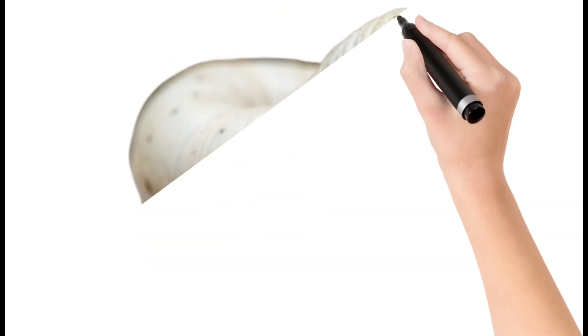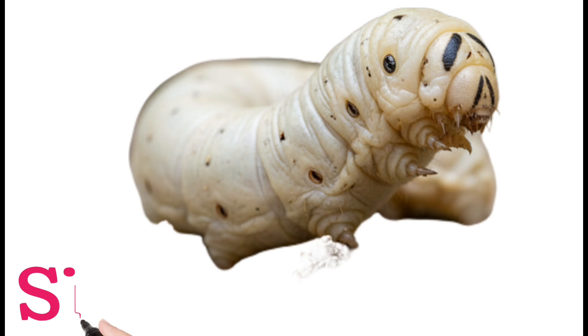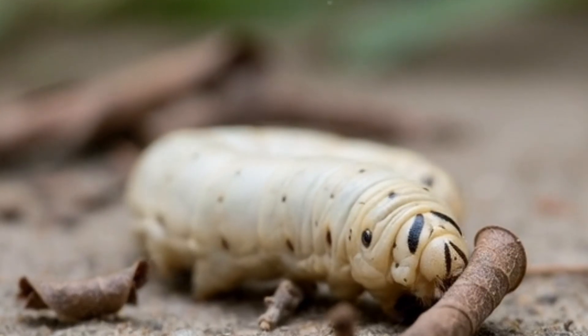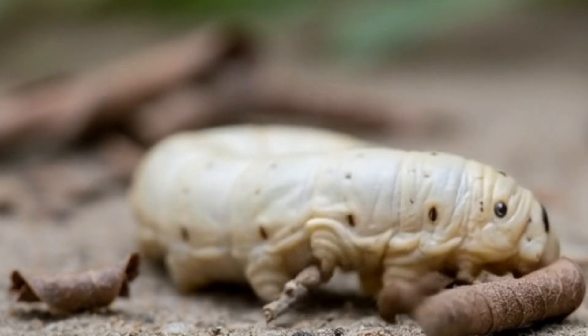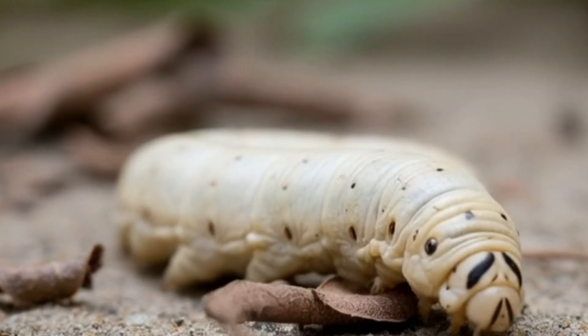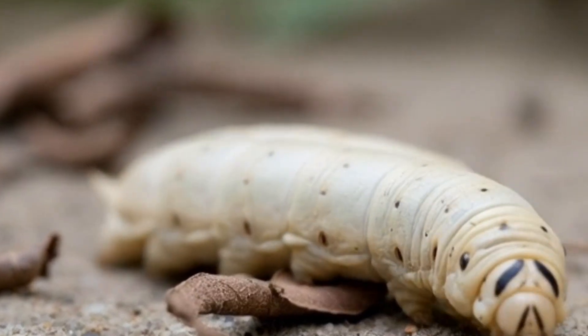Silkworm. A silkworm is the larva of a silk moth. It feeds on mulberry leaves. Silkworms produce silk fibers. Silk is used to make fine cloth.